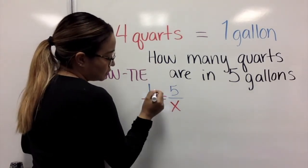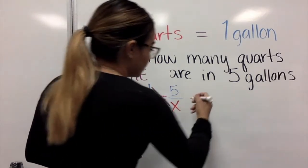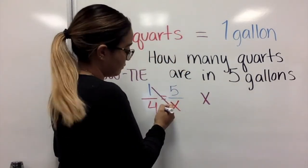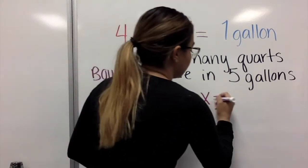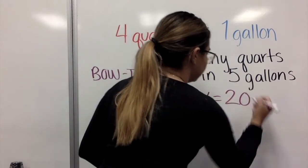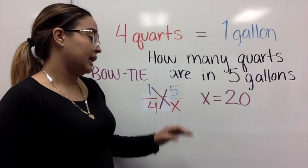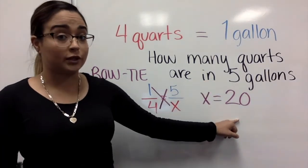We are going to multiply one times x, which will give us x. Then we're going to multiply four times five. That equals twenty. So now we know that in five gallons there are twenty quarts.